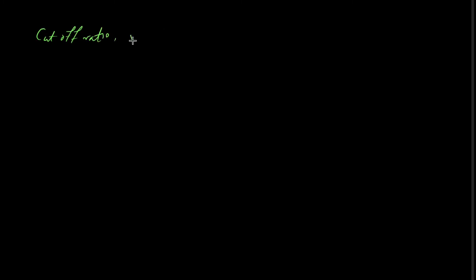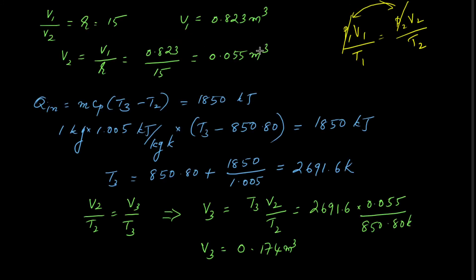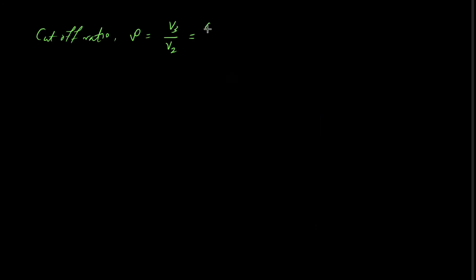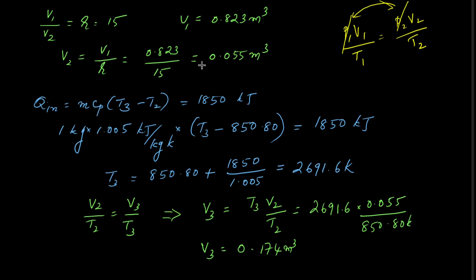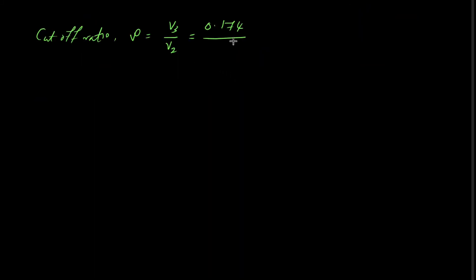Now we calculate the cutoff ratio: ρ = V3/V2 = 0.174 / 0.055 = 3.16. That is the cutoff ratio.